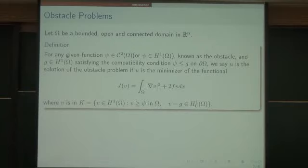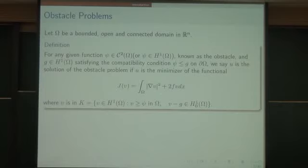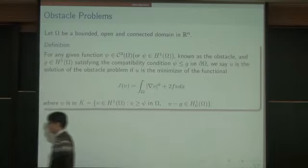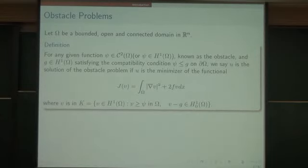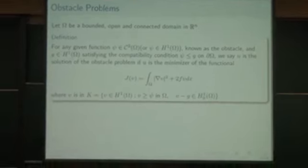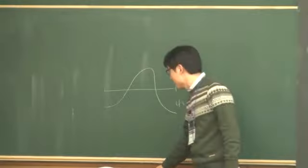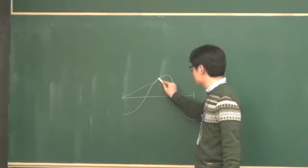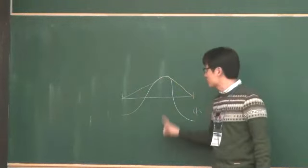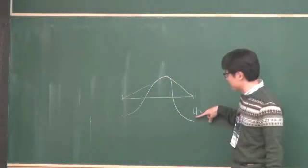The function v is chosen in this set where psi, the obstacle, acts as a constraint. It is well known that we always find the minimizer u in this situation. Geometrically, it is the least supersolution of the harmonic equation which is bigger than psi. This is our boundary and this is the obstacle psi; our solution looks like this — a supersolution bigger than the obstacle.